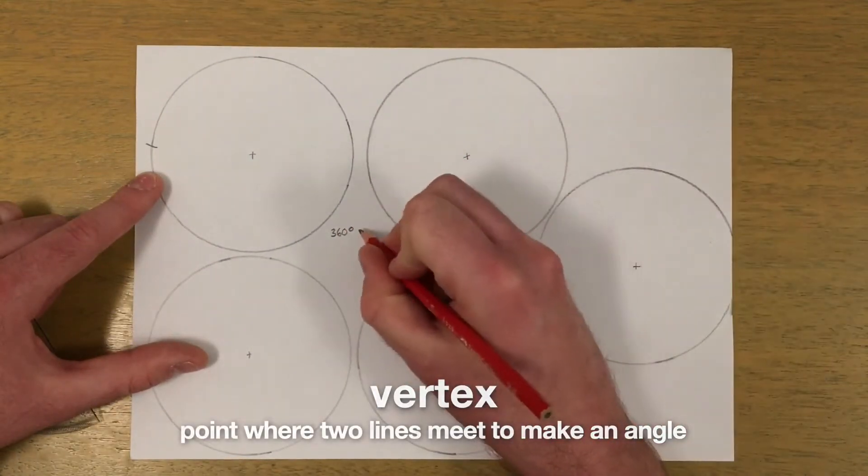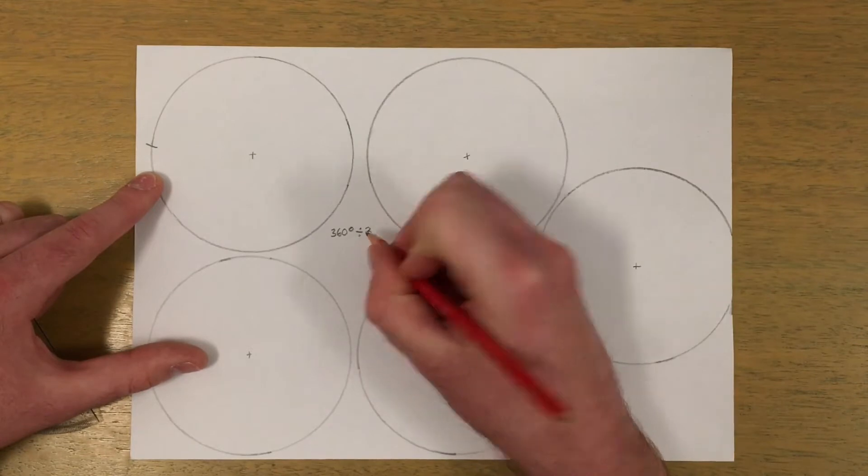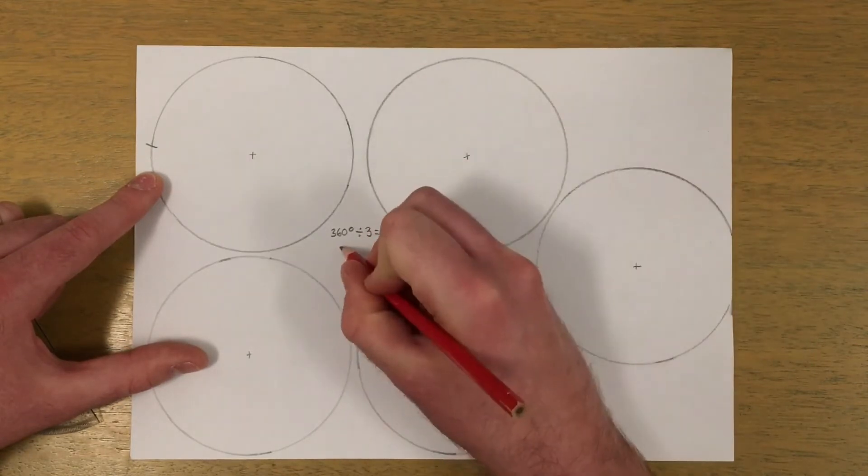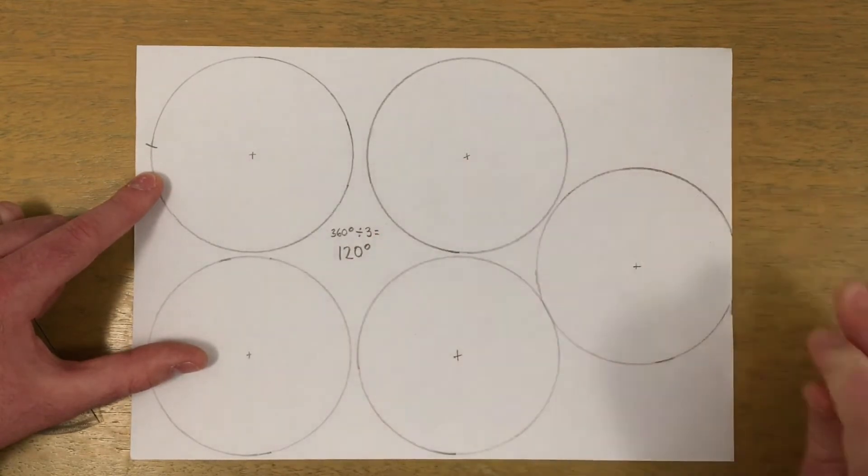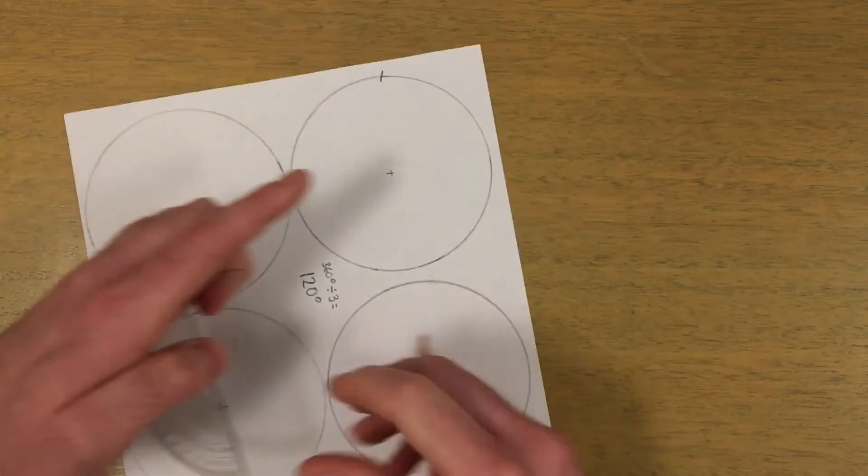A full rotation is 360 degrees, so dividing by three equals 120 degrees between each vertex.